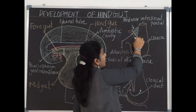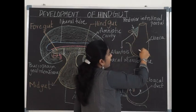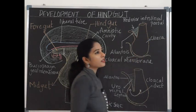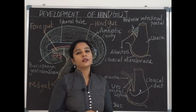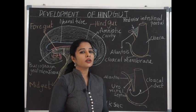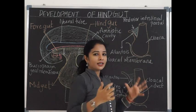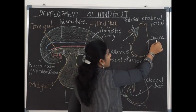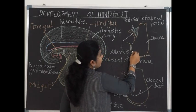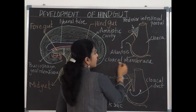The allantois arises from the ventral side of the hindgut, dividing the hindgut into a pre-allantoic part and a post-allantoic part. The pre-allantoic part forms the rest of the transverse colon — that is, the lateral one-third of the transverse colon — descending colon, sigmoid colon, and part of the rectum. The lower post-allantoic part gets dilated to form a cloaca, which is lined by endoderm. This is called the endodermal cloaca, and it is limited below by a membrane called the cloacal membrane.